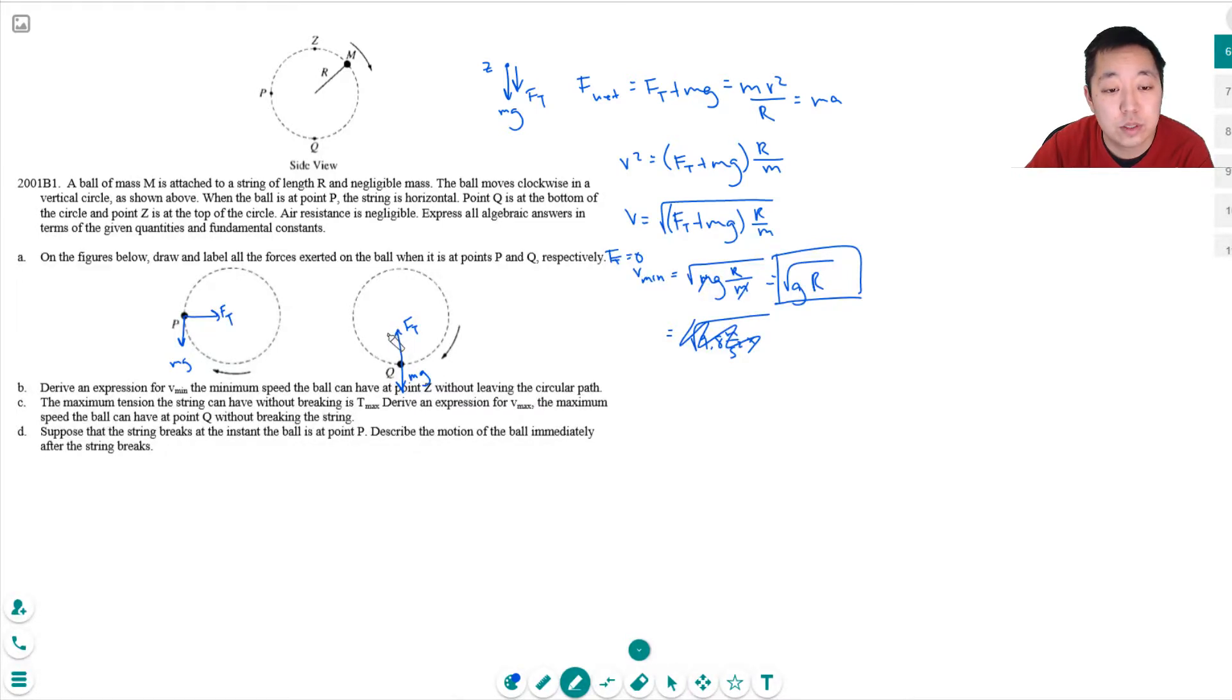So T max. Okay. So here at point Q, the net force is equal to FT minus MG. Because I'm always going to say when I do these kinds of problems that directed towards the center in circular motion is positive. That's the positive direction.